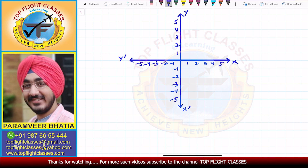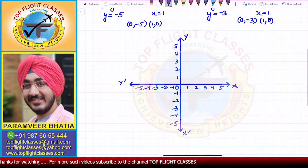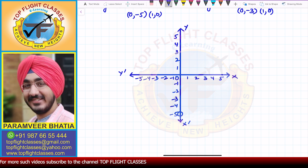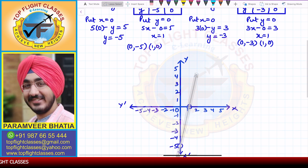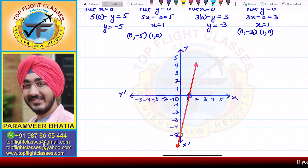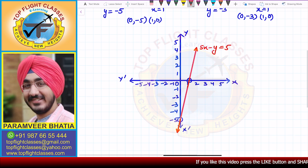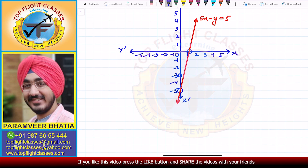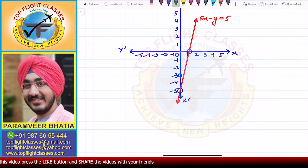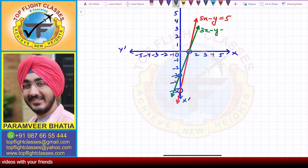This is the graph with the origin marked. The first point for the first equation is (0, -5) and the second is (1, 0). Drawing a line between these two points gives us the line representing 5x minus y equal to 5. For the second equation 3x minus y equal to 3, the first point is (0, -3) and the second point is (1, 0), which is already marked. Drawing that line gives us the second line.